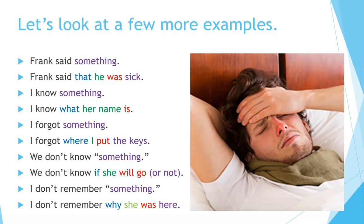'I know something.' 'I know what her name is.' Extra word: 'what.' Subject: 'her name.' Verb: 'is.' 'I forgot something.' 'I forgot where I put the keys.' Start with the extra word: 'where.' Subject: 'I.' Verb: 'put.' 'The keys' — in this case, it's an object of the noun clause.